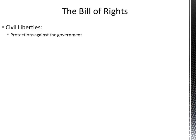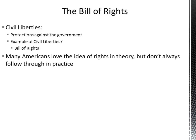Civil liberties are protections for individuals against the government. An example of civil liberties is the Bill of Rights, the first 10 amendments to the Constitution. Many Americans, when talking about the Bill of Rights and particularly the First Amendment, love the idea of rights in theory, but don't always follow through when certain elements are put into practice. An example is Texas v. Johnson, in which it was declared constitutional to be able to burn an American flag.